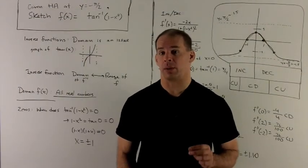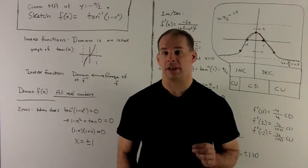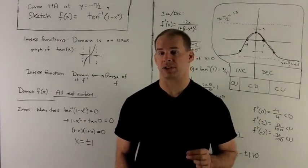Given a horizontal asymptote at y equals minus pi halves, let's sketch the graph of inverse tangent of 1 minus x squared.